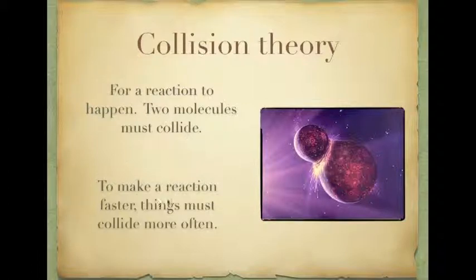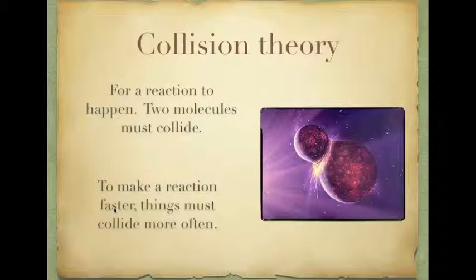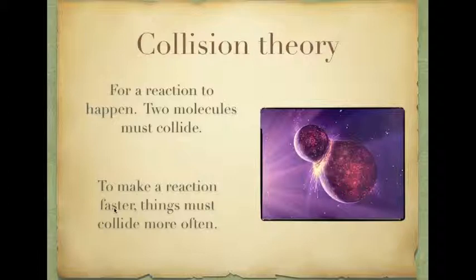If we have lots of collisions happening at a fast rate, the reaction actually goes quite fast. If the reaction happens slowly, that means we're not getting a lot of collisions. So what we deal with in terms of reaction rates is making collisions happen more often — making successful collisions happen more often in particular. Let's go have a look at how we can make collisions happen.